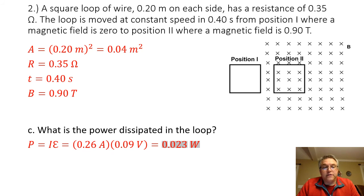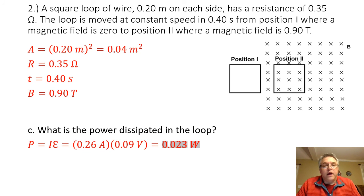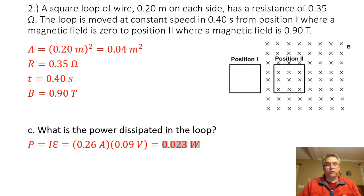Part C asks: what is the power dissipated in the loop? Once again, the power equals the current times the induced EMF, so P equals I times epsilon. The current is 0.26 amps and the induced EMF is 0.09 volts, giving a power dissipated of 0.023 watts.